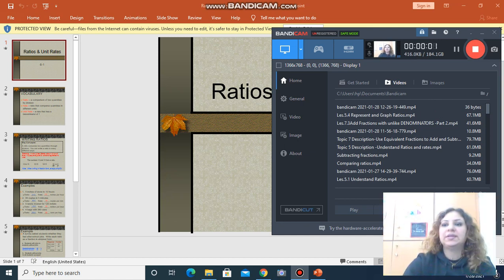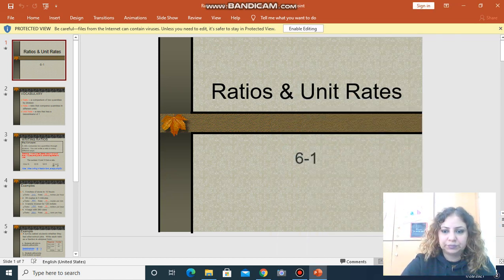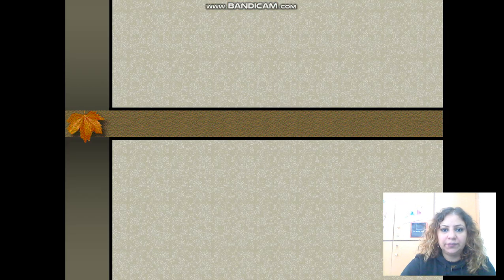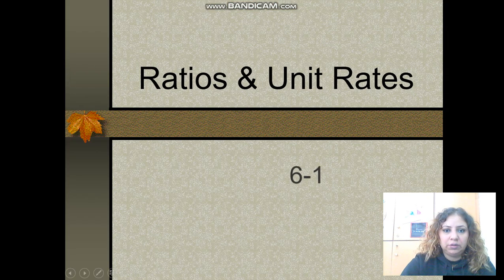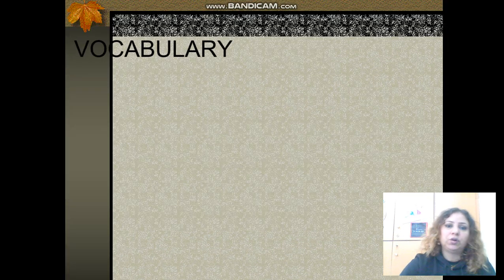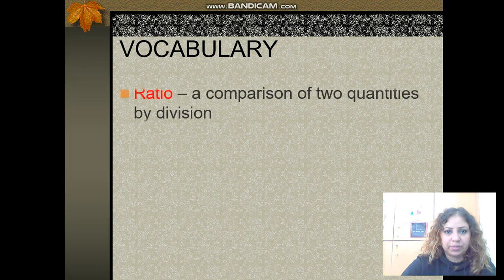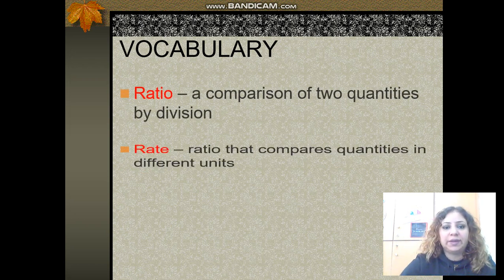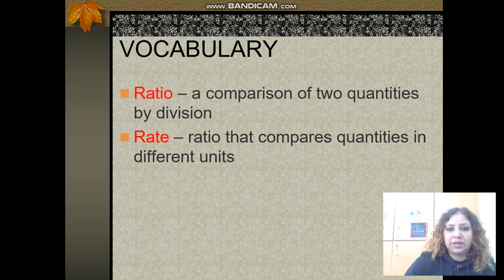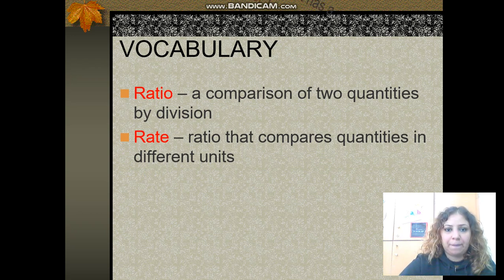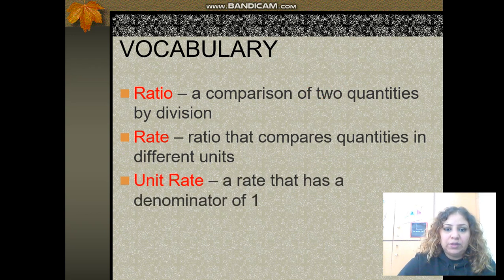Hello boys and girls, our lesson today is about ratios and unit rates. Let's get started. A ratio is a comparison of two quantities by division. A rate is a ratio that compares quantities in different units. A unit rate is a rate that has a denominator of one.